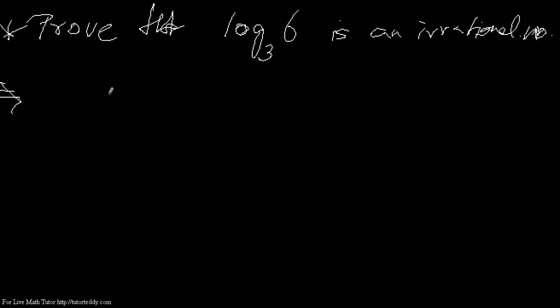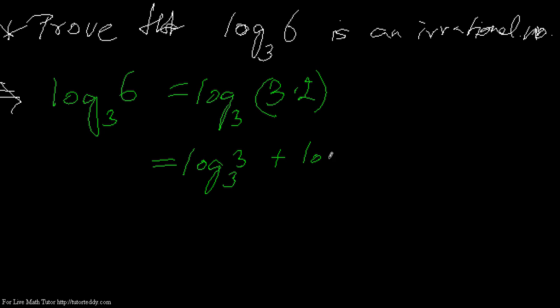We first write down this number log 6 base 3. We can open this number like this, we can keep the base same and break the number 6 into 3 times 2, that is 6. We can write this as log 3 with base 3 plus log 2 with base 3. Because this is the formula of logarithm: when we have multiplication of 2 numbers, log of multiplication of 2 numbers, we can break them into their addition forms.